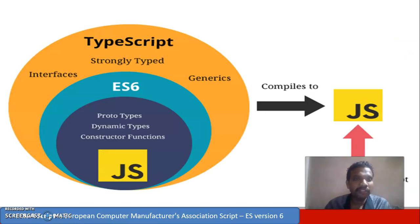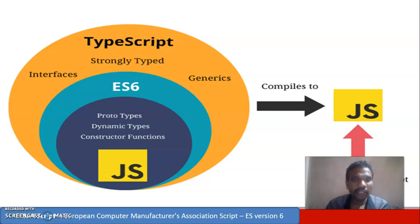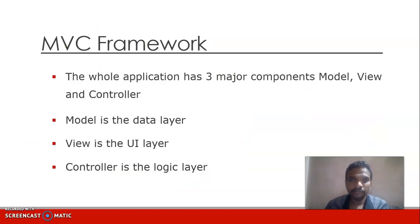TypeScript comprises strongly typed code. The standard ECMAScript — European Computer Manufacturer Association script — comprises prototypes, dynamics, and constructor functions. The combination of all those things creates TypeScript code. When you compile TypeScript code, it automatically creates JavaScript code. TypeScript code cannot directly run on the browser; JavaScript code is what executes on a browser.